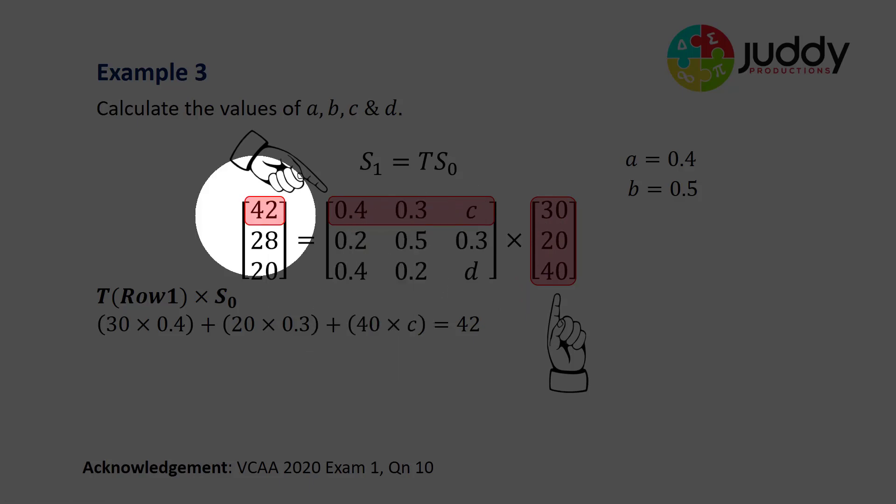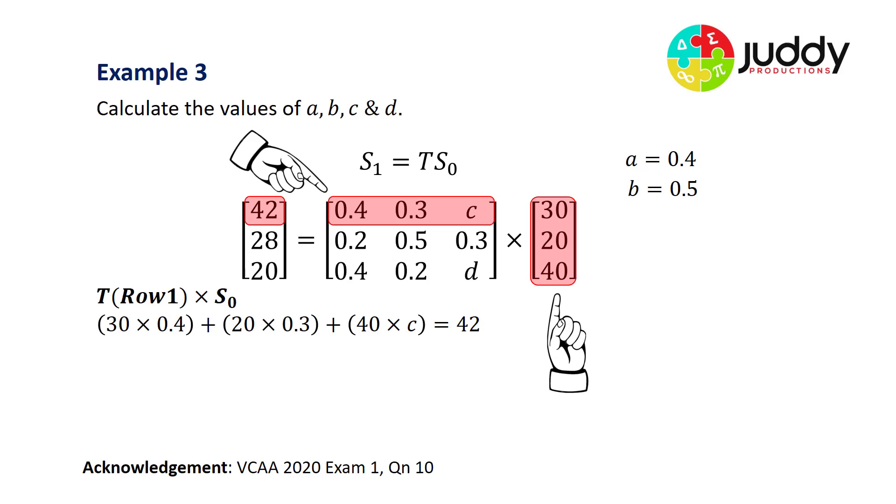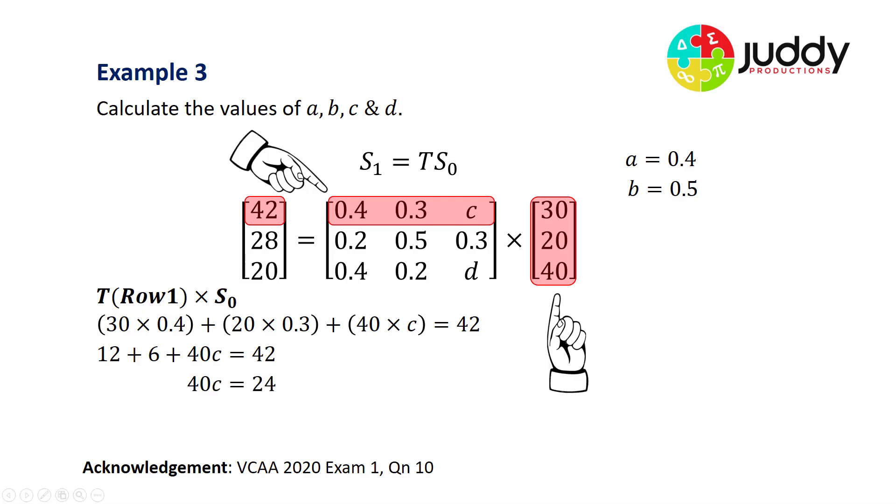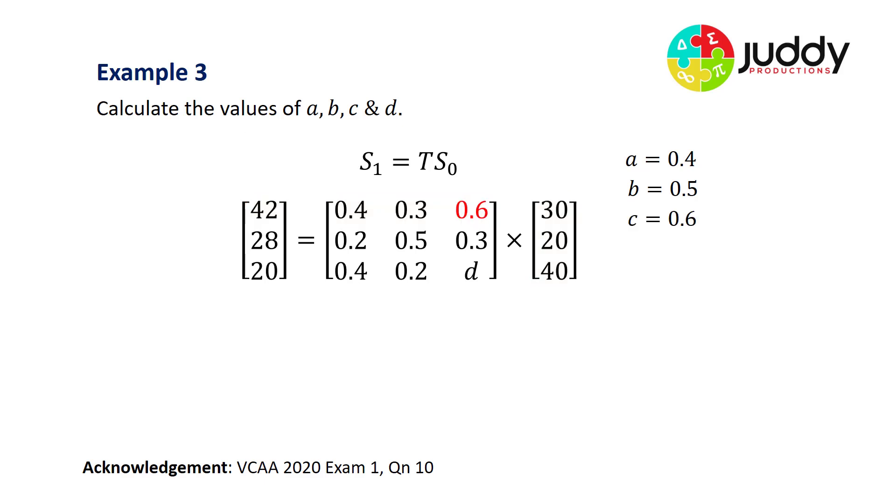When you add the sum of those products together, you get the value 42. Let's simplify: 30 times 0.4 gives us 12, 20 times 0.3 gives us 6, 40 times C gives us 40C, and that equals 42. If I add my 12 and 6 together, that gives me 18 and take that from 42, I end up with 40C equals 24, and divide both sides by 40 gives me C of 0.6. I now know that C equals 0.6 and I've only got variable D to work out.